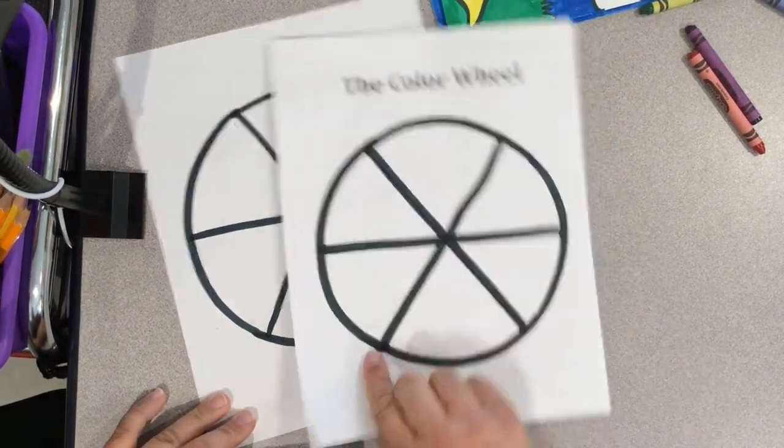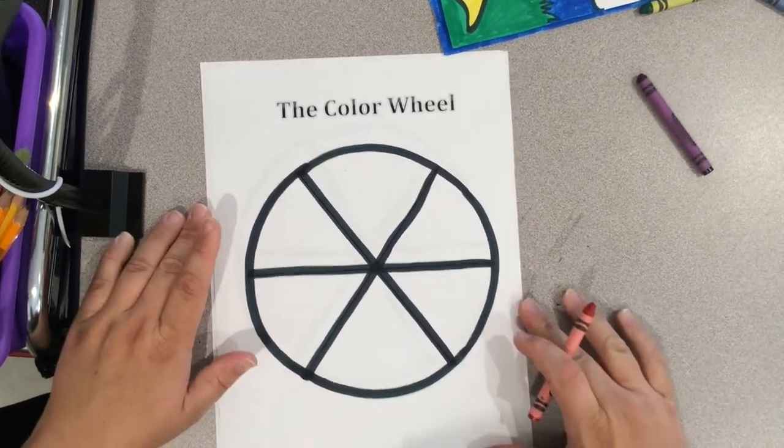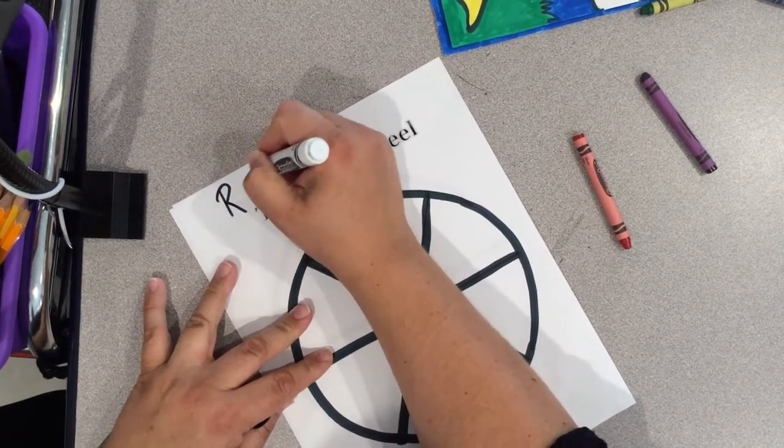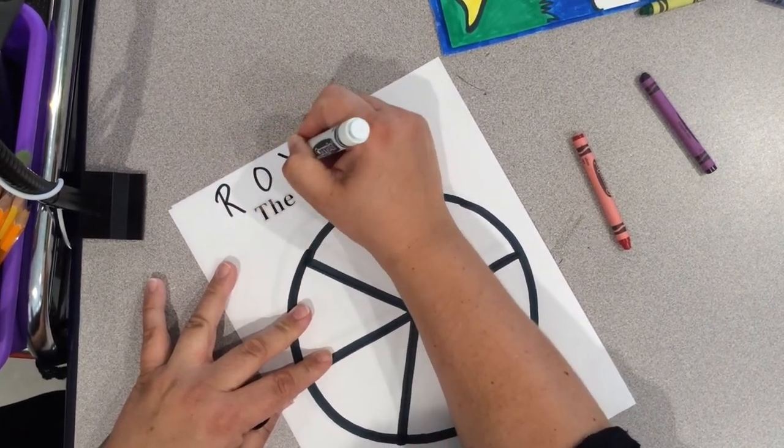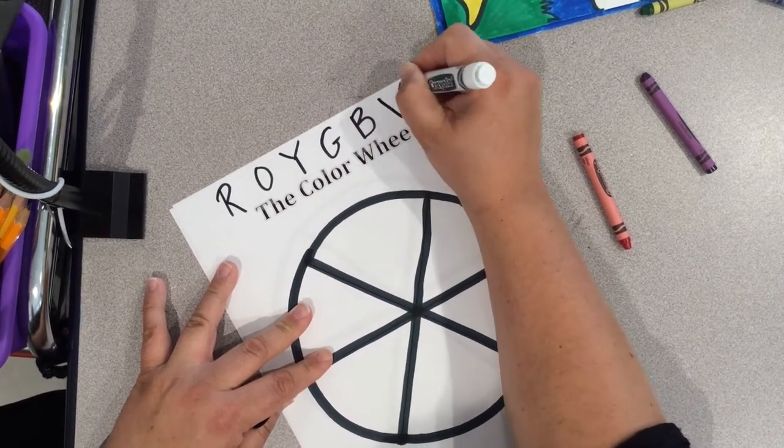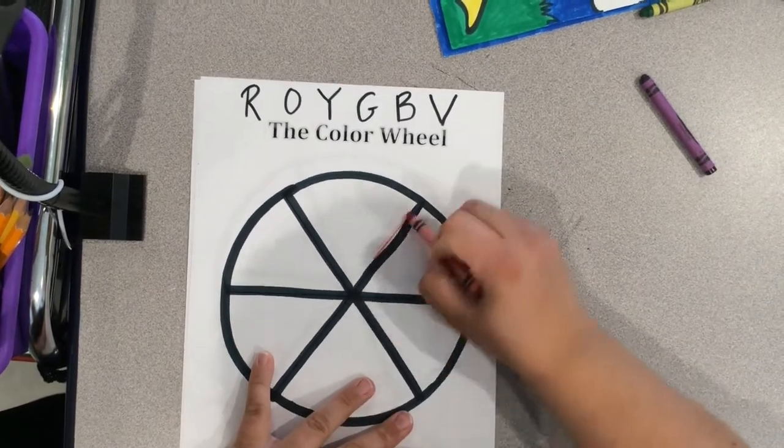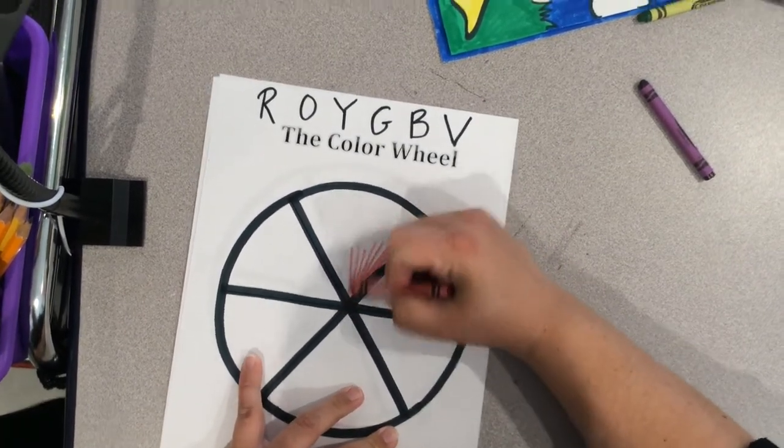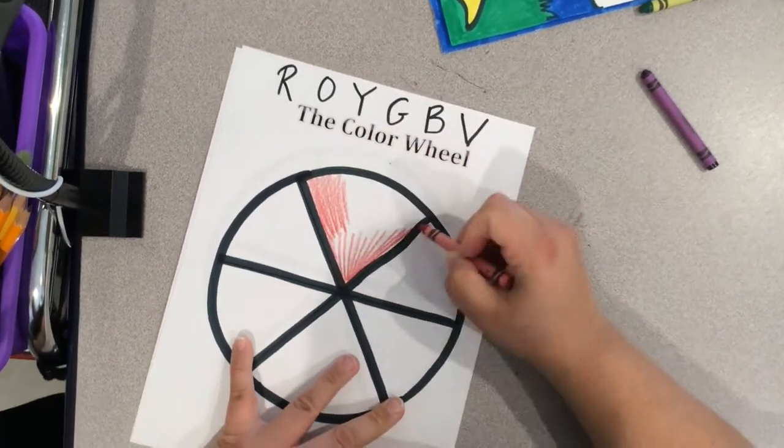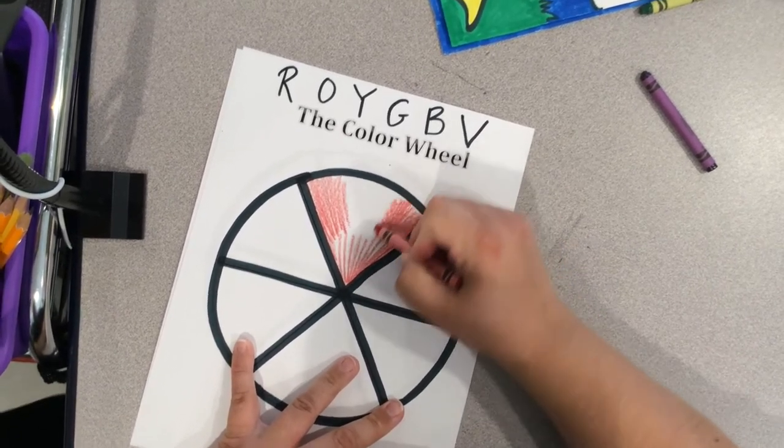Next we are going to label our color wheel so that we are sure to put our colors in order. So just at the top of your paper, we're going to write R-O-Y-G-B-V. So we've got red, orange, yellow, green, blue, violet. Normally we have the color indigo in R-O-Y-G-B-I-V, but when we're talking about the color wheel here, we usually only refer to these six colors. So go ahead and start coloring your color wheel in order.